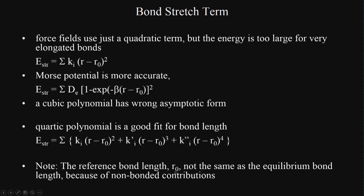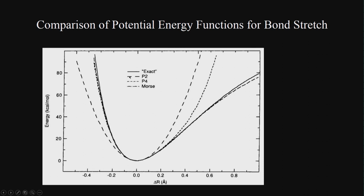Note that R0 is not the same as the equilibrium bond length because of non-bonded contributions. There could be electrostatic attractions when considering a molecule with many atoms, so R0 changes due to other interactions. Comparing quadratic, quartic, and Morse against the exact curve, Morse fits much better than quadratic or quartic in many cases.